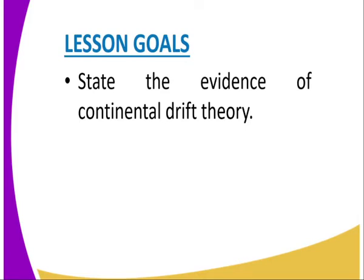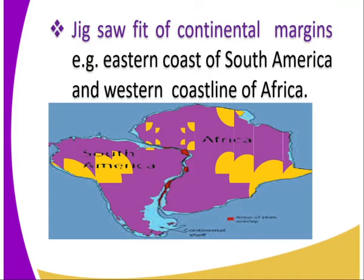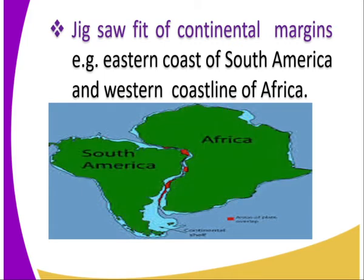Our lesson today, we are going to look at the evidence of the continental drift theory. In our previous lesson we discussed the continental drift theory according to Alfred Wegener, where we said it was initially one Pangea, and the Panthalassa which was the water, then it spread into two, and then into the current continents. Now let us look at the evidence that supports that.